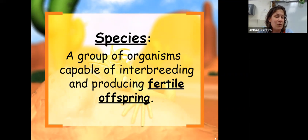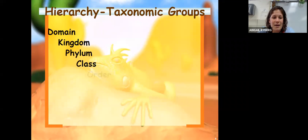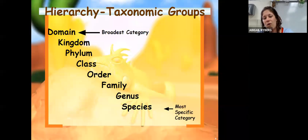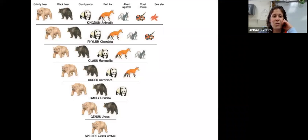When we look at our classification system, it starts with domain. Domain is the broadest category, and then we slowly get more narrow and more narrow based on specific characteristics. So we go from domain all the way down to species, which is the most specific category.